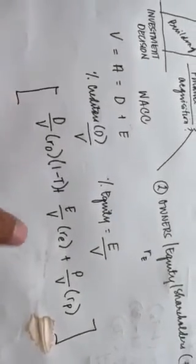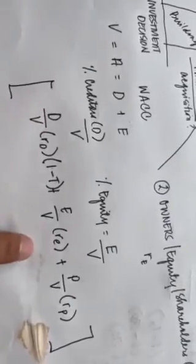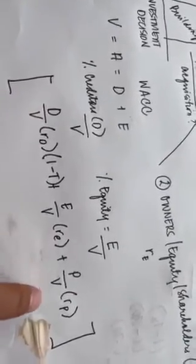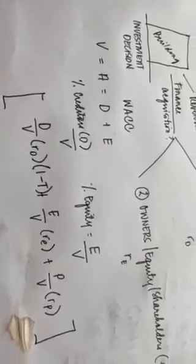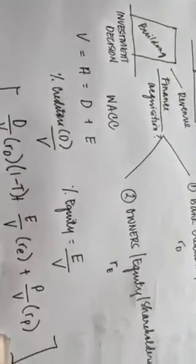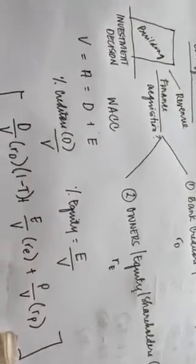This involves getting the proportion or contribution of each — like the bank creditors, the equity shareholders, and the preference shareholders — getting the proportional contribution of each party. Now I have here a simple exercise for the computation of the weighted average cost of capital.